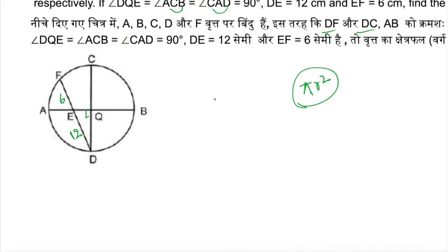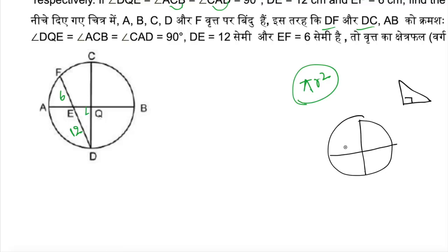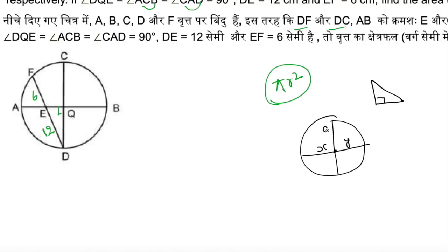We will use 3 small concepts. The first concept I want to use is the Pythagorean theorem. I hope you know the Pythagorean theorem. The second thing I want to use is the chord product theorem: if you have two chords, the left part is X, the right part is Y, and the top and bottom are A and B, then the product of left and right equals the product of the chord segments.